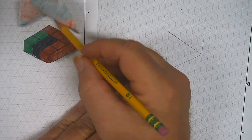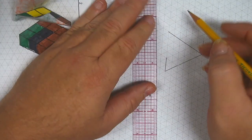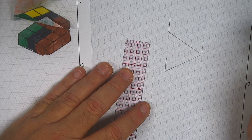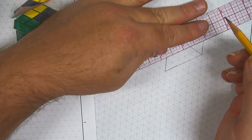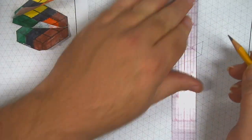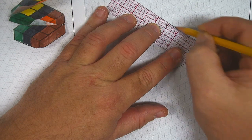And then this final edge up here is going to be two units tall. All right, so things are starting to come together. Now I'm going to connect these edges to get the very top edge that runs across all three cubes.